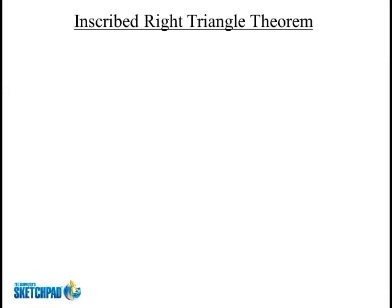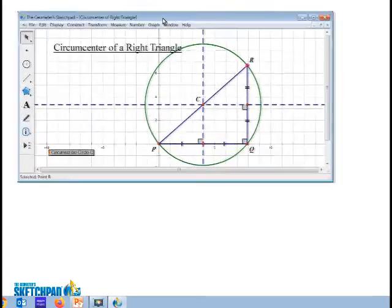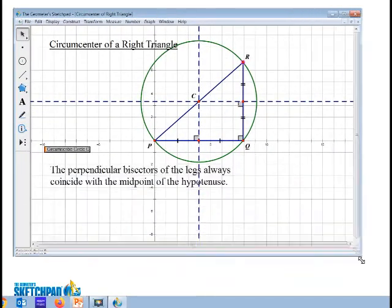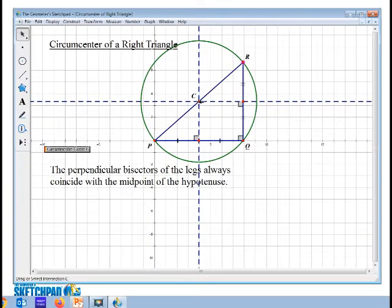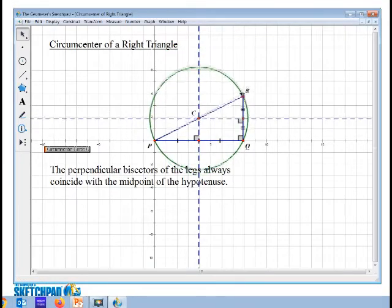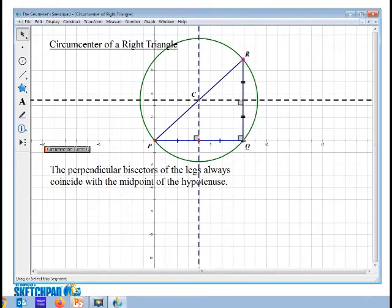Okay, you may remember in an earlier lesson when we were talking about the circumcenter of a triangle, I showed you how the circumcenter of this triangle, where the perpendicular bisectors meet, is that that circumcenter is always on the hypotenuse of the right triangle. So no matter how I change the size of the circle, from any point...